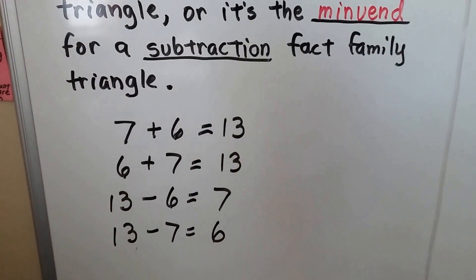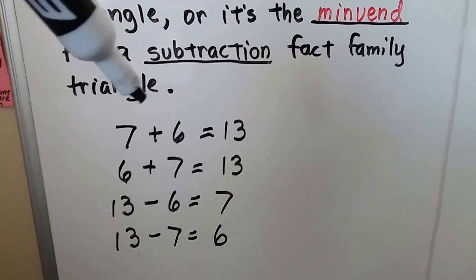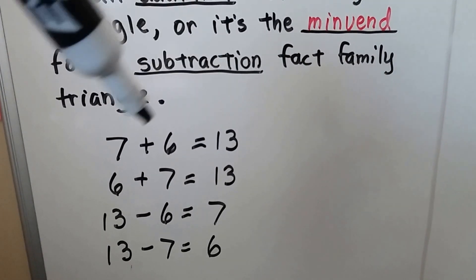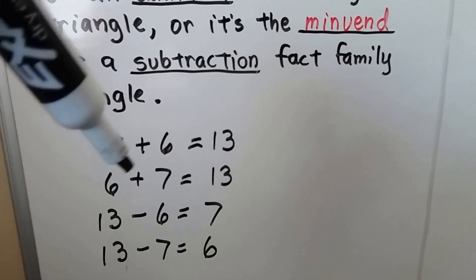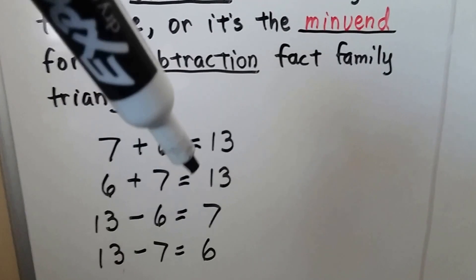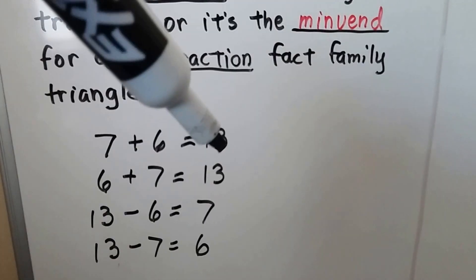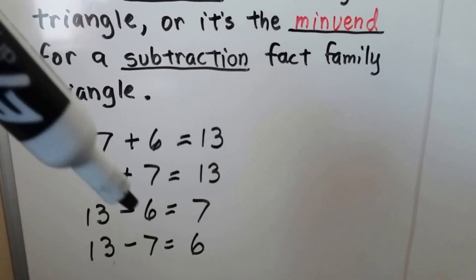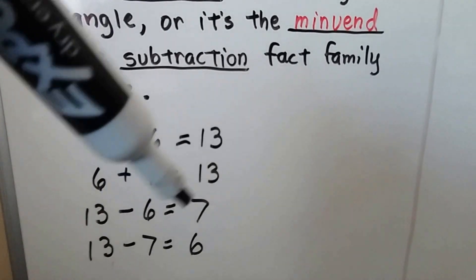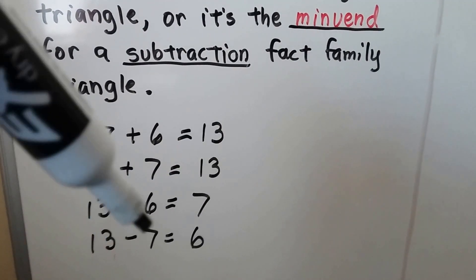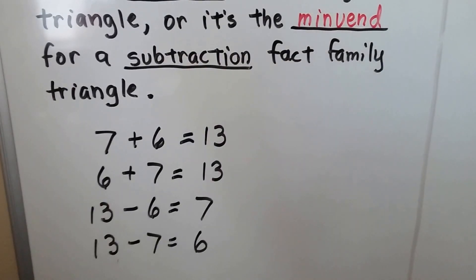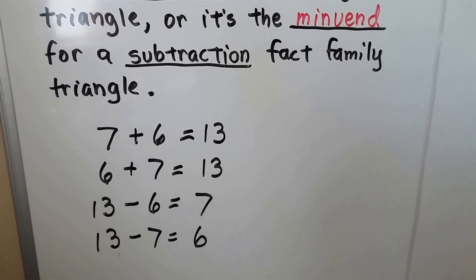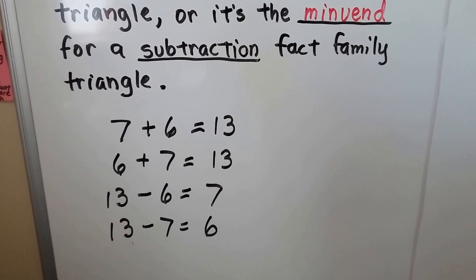So we can make this fact family with 13, 7, and 6. We have 7 plus 6 equals 13, or they can trade places and be 6 plus 7 equals 13. The sum becomes the minuend for a subtraction sentence: 13 minus 6 equals 7, or 13 minus 7 equals 6. That's our fact family — two addition sentences and two subtraction sentences.